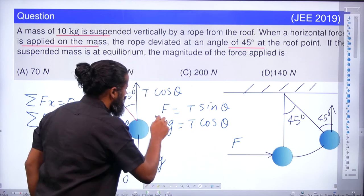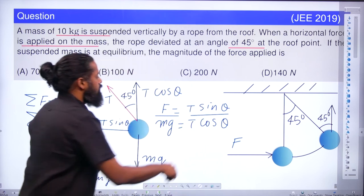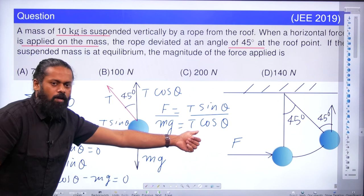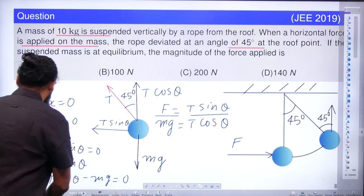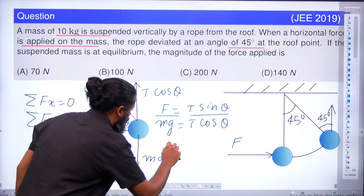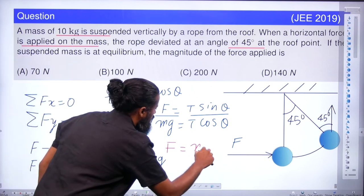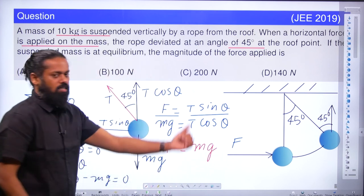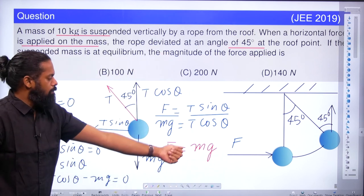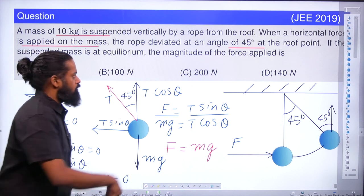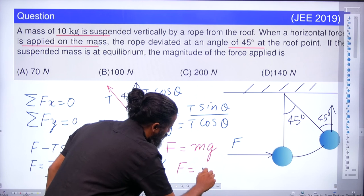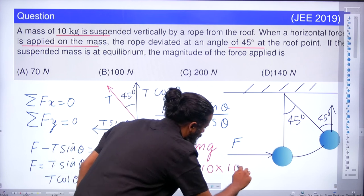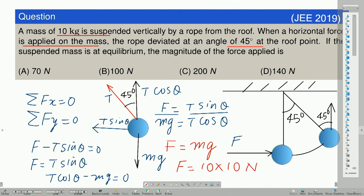Dividing these two equations, the T cancels out. Since theta is 45 degrees, sine 45 and cos 45 are both 1 over root 2, so they also cancel out. You get F equals mg. The mass is 10 kilogram, so F equals 10 multiplied by g. Taking g as 10, F equals 100 newton. So 100 newton is the answer.